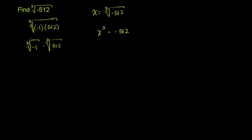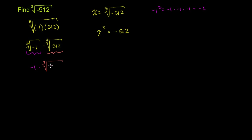The cube root of negative 1 is pretty straightforward. What number, when raised to the third power, gives negative 1? Negative 1. Negative 1 to the third power is negative 1 times negative 1 times negative 1, which equals negative 1. So the cube root of negative 1 is negative 1, giving us negative 1 times the cube root of 512.